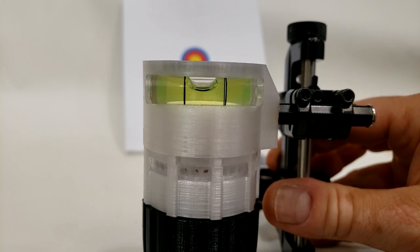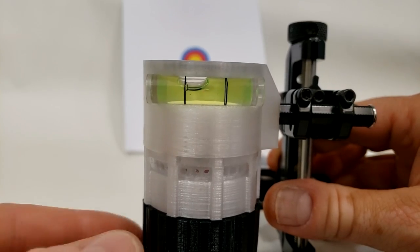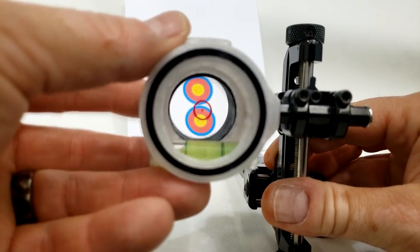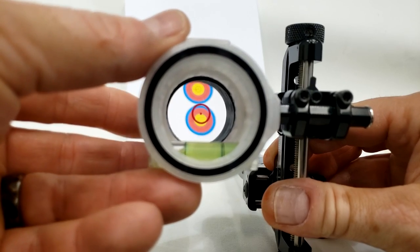Now you can see the difference if I mount the lens in the rear position that is not in the true center of the scope. Any rotation is going to throw you off zero.